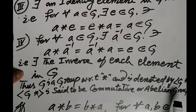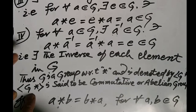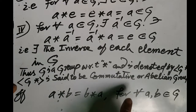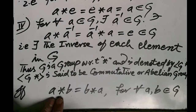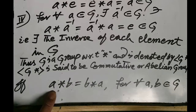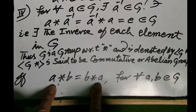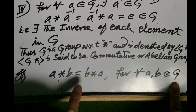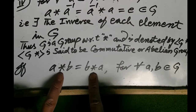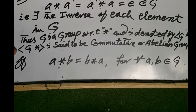Then the set G is called a group with respect to the binary operator star. The group G with respect to the binary operator star is called commutative or abelian if it satisfies one additional condition: for each a, b belonging to G, a star b is equal to b star a. That is, the elements of G satisfy the commutative property with respect to the binary operator star.